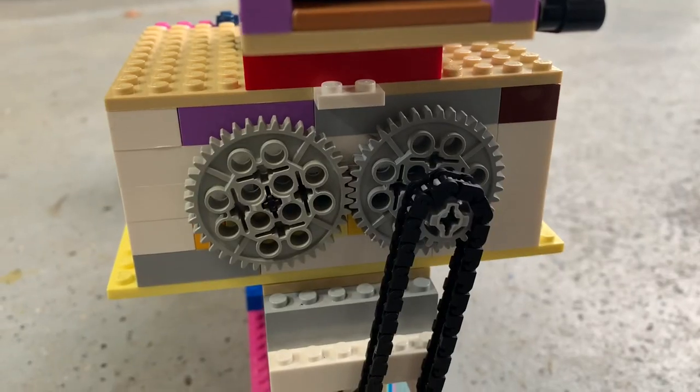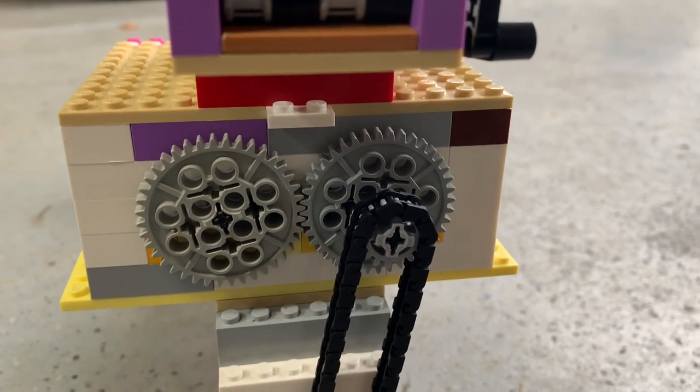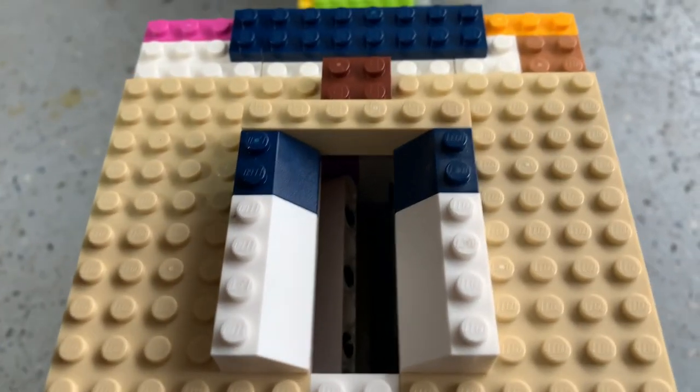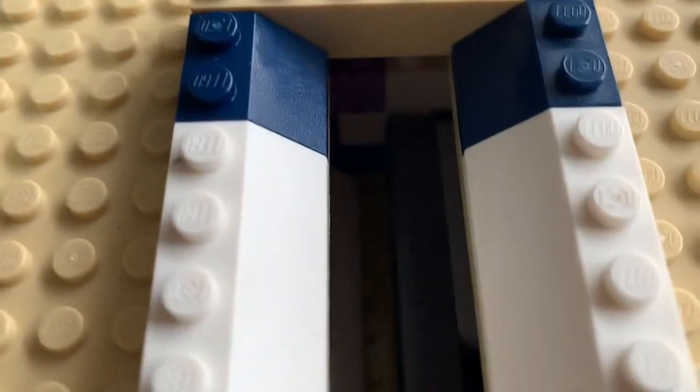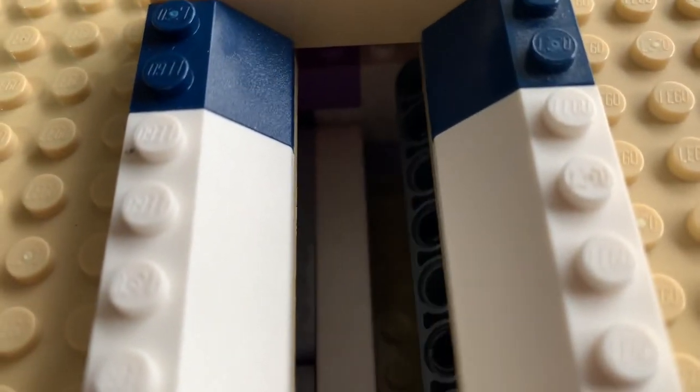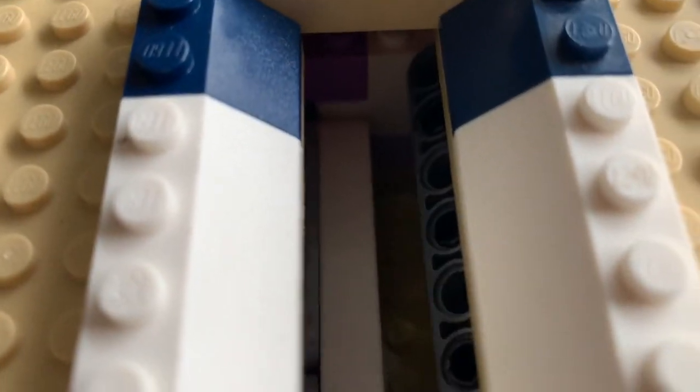Shout out to my biology teacher for letting me borrow these two gears - this would not have been possible without those. I'd call this design a twin paddle design rather than a twin screw design because you can't replicate screws with LEGO. This is just three blade gears meshing with each other as you can see right there.